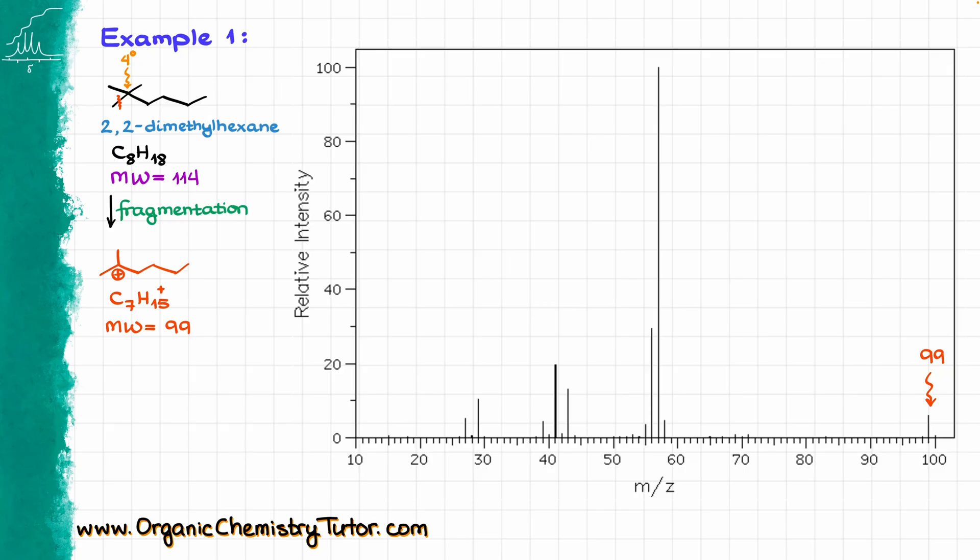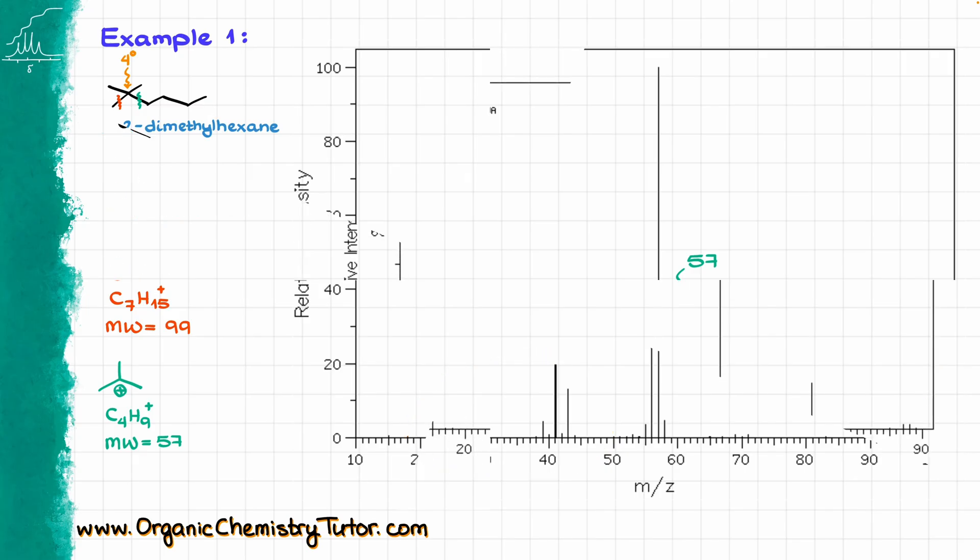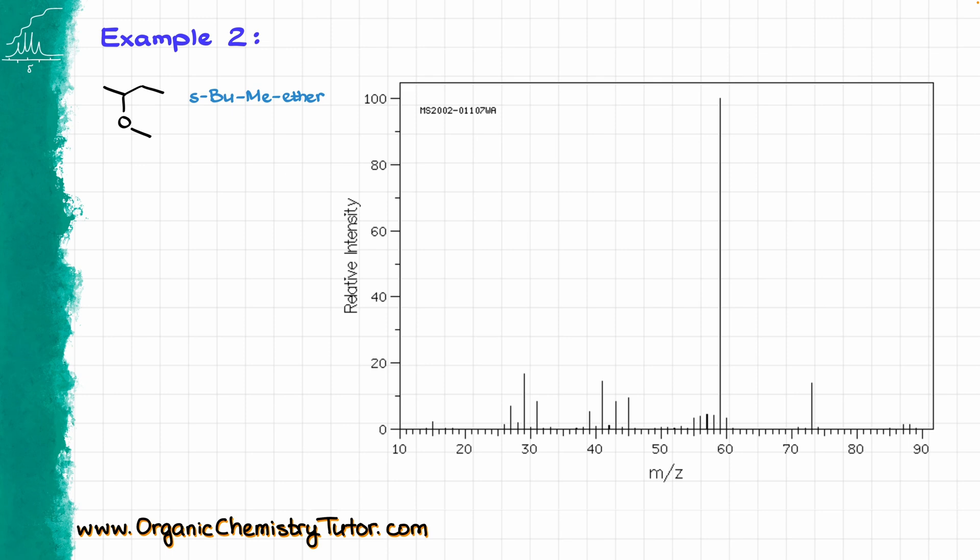Likewise, if I look at the next place where I can break this molecule apart, that would be right over here, giving me another tertiary carbocation, that one has the molecular weight of 57, and we do have that peak as well. And typically, within the scope of our course, we don't usually focus on any smaller chunks that have the molecular weights around 40 and below, so stuff that we have over here is probably not really going to be relevant, and I don't usually see instructors asking for the identification for those tiny chunks. So, with that in mind, let's move to a slightly more complex example.